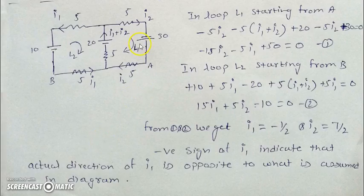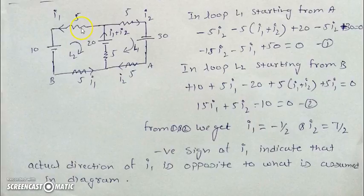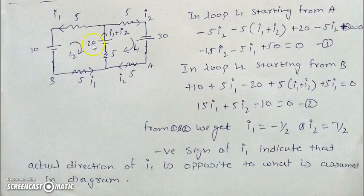Here is another example of KVL and KCL. In this circuit there are three batteries of 10, 20, and 30 volts with their respective polarities and a few resistances as shown. We assume the current in one loop is I1 and in the other loop is I2, moving in the shown directions. According to KCL at the junction, I1 plus I2 must enter. We can move in any direction in these loops. Let's start moving in loop 1 in the clockwise direction from point A.